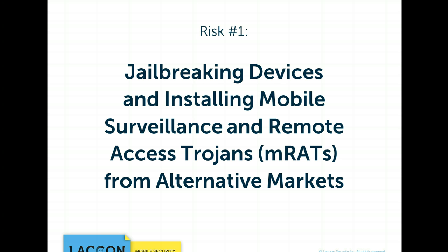Risk number one: jailbreaking devices and installing mobile surveillance and mobile remote access Trojans, also known as MRATs, from alternative markets. These attacks leverage a jailbroken device, which means that all the built-in iOS security mechanisms have been removed. In turn, an attacker can install a malicious executable — the MRAT. As its name implies, a remote access Trojan takes full control of the sensors and the hardware of the mobile device without the owner's knowledge.